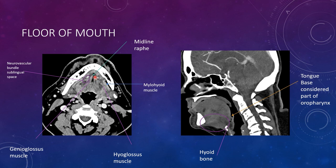You need to notice the midline raphe because any cancers that cross the midline are a higher stage, and anything that invades into that neurovascular bundle in the sublingual space is also upgraded in terms of cancer staging.